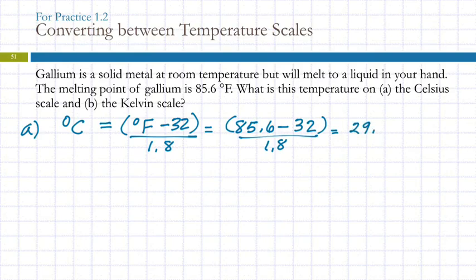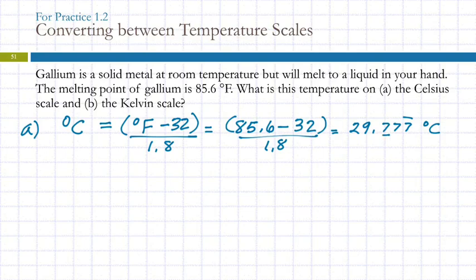My calculator gives me 29.777 repeating. That is the temperature in degrees Celsius. For temperatures, the best thing to do is look at where the original number ends — this number had a digit in the tenths place, so we round our converted temperature to the same decimal place. We round to the tenths place and say this is 29.8°C. That's the answer to part A.